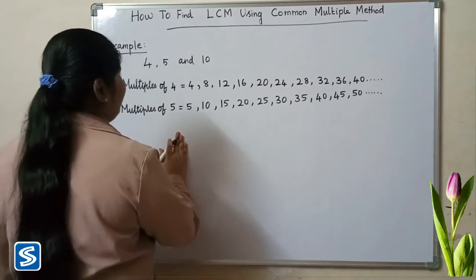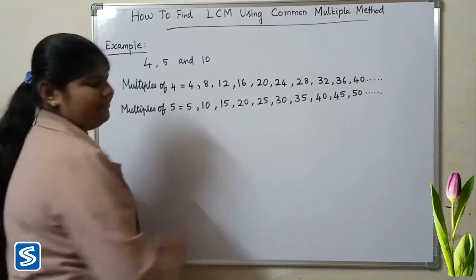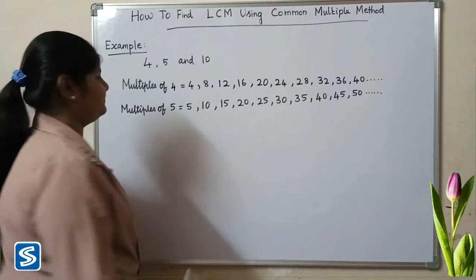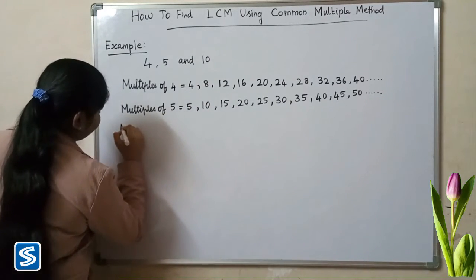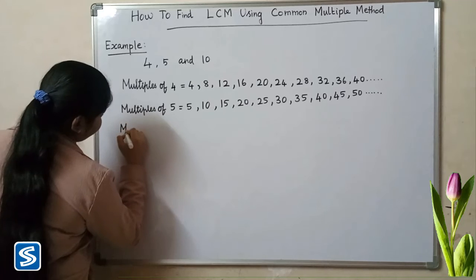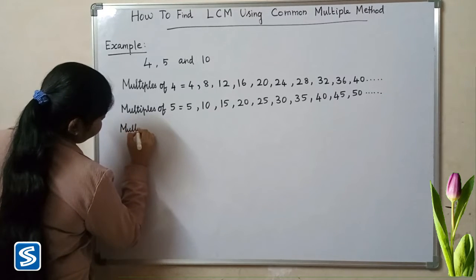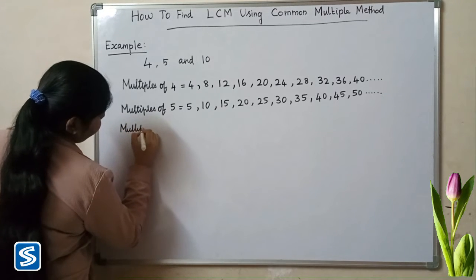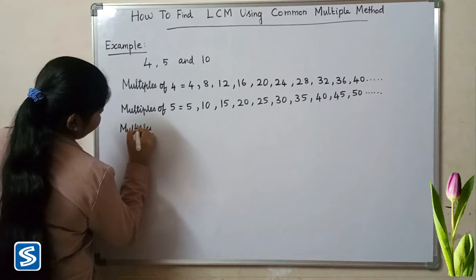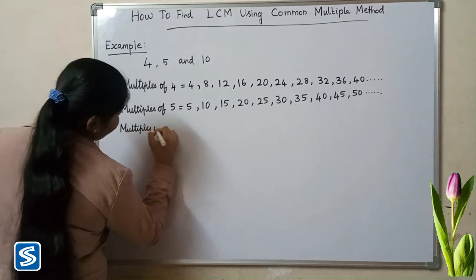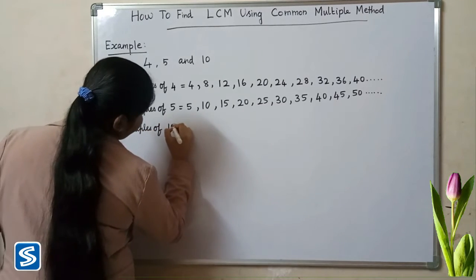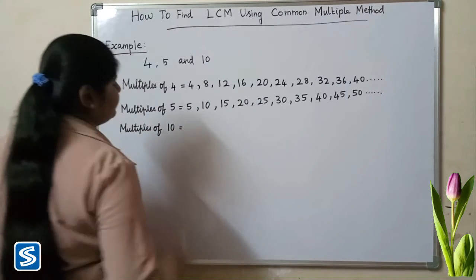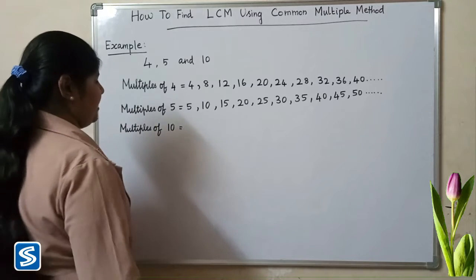So next we will find the multiples of 10. Multiples of 10 are: 10, 20, 30, 40, 50, 60, 70, 80, 90, 100, and so on.